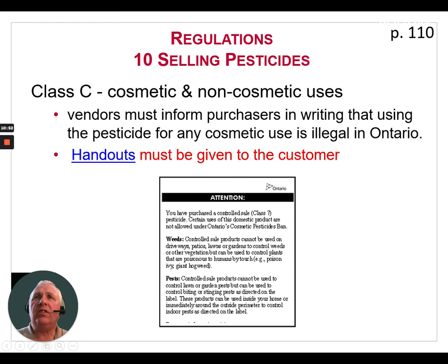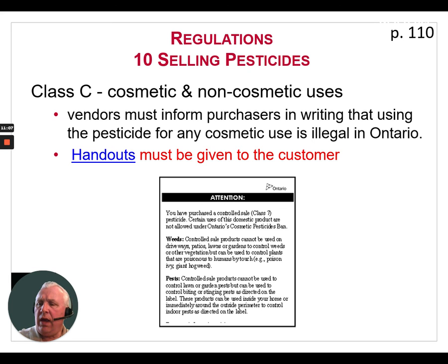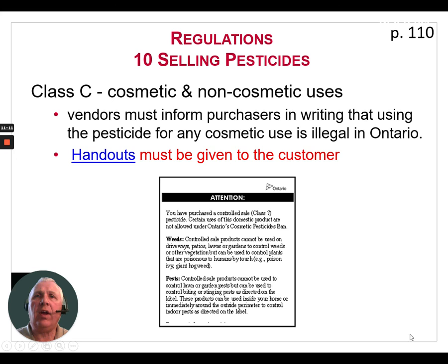For Class C pesticides with cosmetic and non-cosmetic uses, vendors must inform purchasers in writing that using the pesticide for any cosmetic use is illegal in Ontario. Handouts must be given to the customer — an example is shown below and there is also an example in the Vendor Pesticide Safety Course manual.